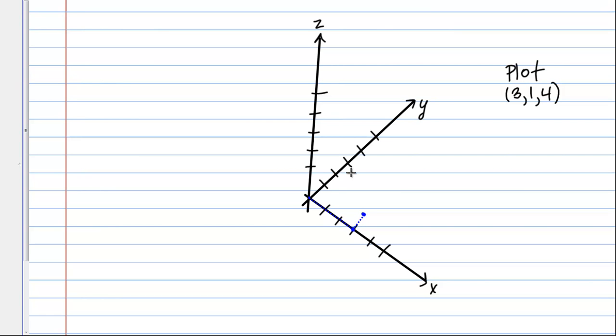And then finally, I'm going to go four units in the Z direction. So I'll get this as close to parallel as I can to my Z axis. Okay, so about here. And now I'm at my point (3, 1, 4) there in red.